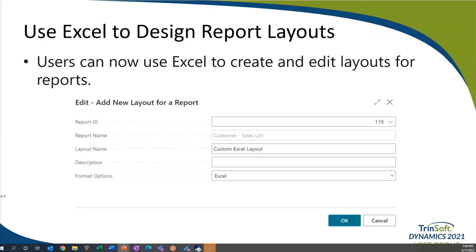One enhancement that is a little more technical is the ability to use Excel to design report layouts. Excel layouts work the same way as Word or RDLC layouts — they can be edited and saved back into Business Central. With Excel layouts, users can create and edit report layouts using the full palette of Excel capabilities such as sliders, diagrams, charts, and pivot tables. To create an Excel layout from scratch, open the report request page and run the report — it generates an Excel file with sample data and available fields. Then add your layouts to additional tabs within the Excel file. To test the layout, import it as a custom layout in Business Central, and once validated, you can run the report with your new layout.